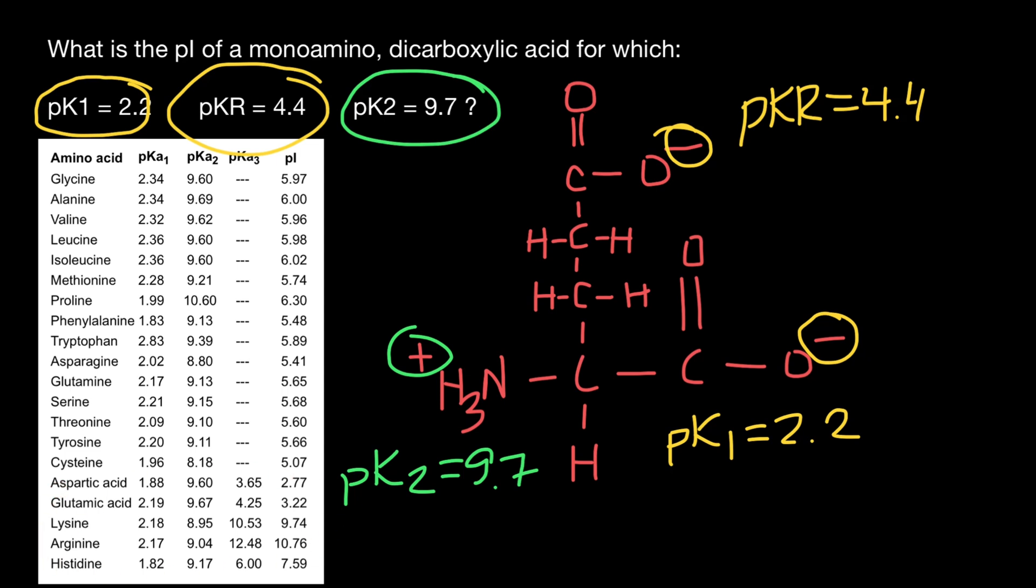But it is very easy to make a mistake with these five. Take a look. Many would make a mistake adding this group pKa2, pKaR, and pKa1, and divide it by three. This is not how it works. Actually, if we have found that this is an acidic amino acid, we have to add pKa1 and pKaR. That's why I show them in the same color. So let's do it. So pI would equal to 4.4 plus 2.2 divided by two. And we are going to get 3.3. This is going to be our answer.